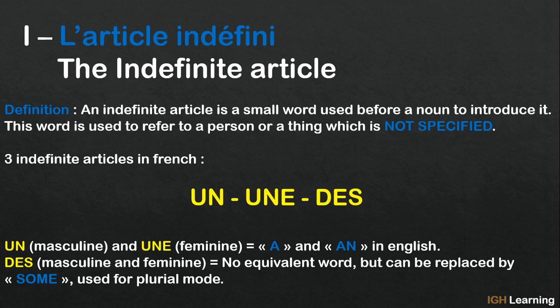So let's see a definition. An indefinite article is a small word used before a noun to introduce it. This word is used to refer to a person or a thing which is not specified. So we have to remember that we use an indefinite article for something which is not specified.